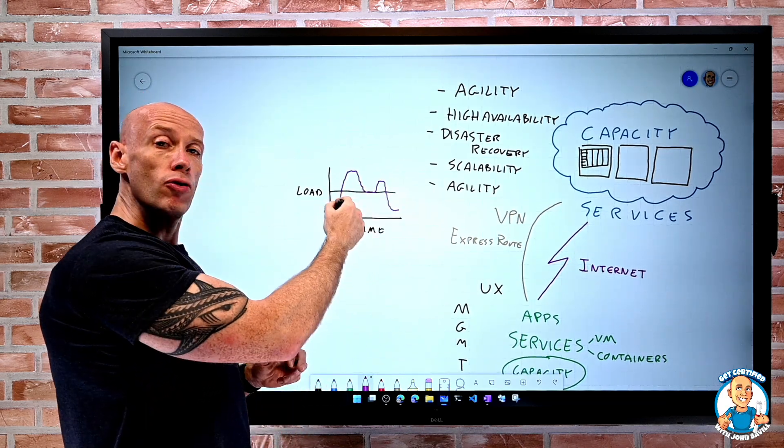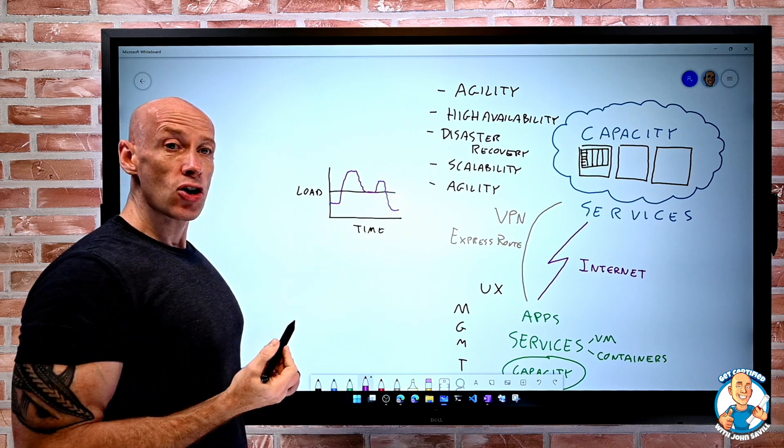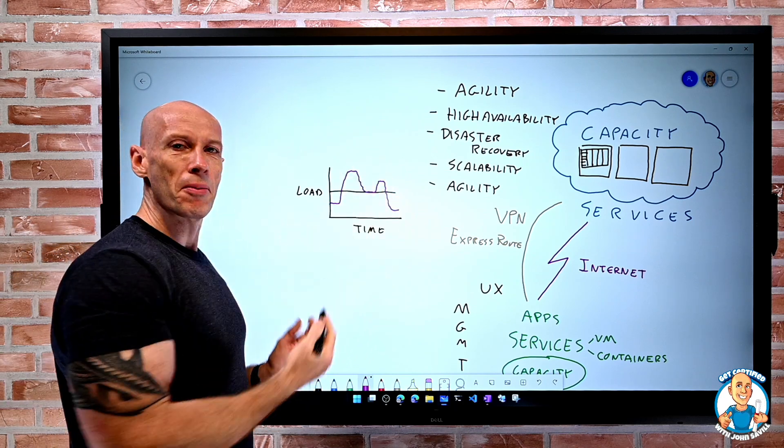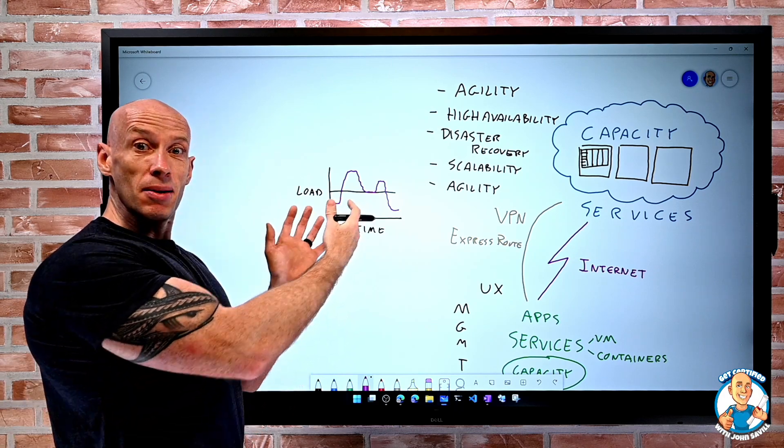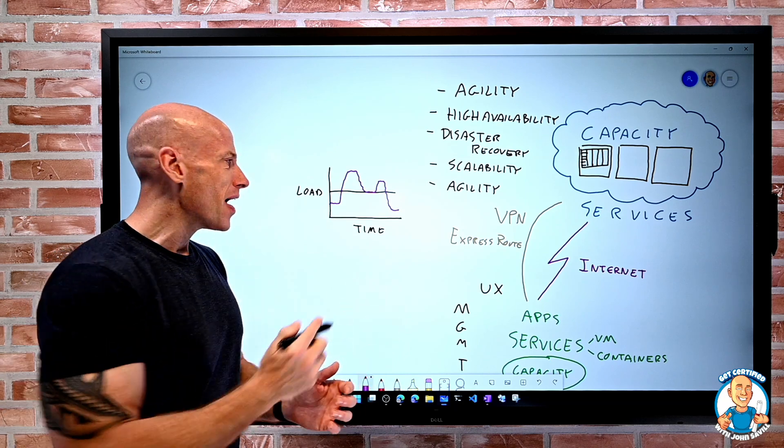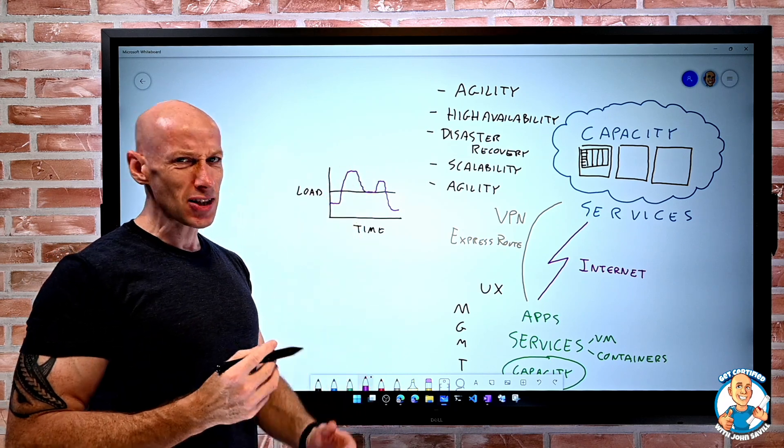That could be over a certain hour. It could be a certain day. Maybe it's a domain controller and there's a logon batch of work. Could be weekly. Maybe it's a system for a pizza restaurant and it's Friday night and it's super busy Friday night. Rest of the time, it's not that busy.